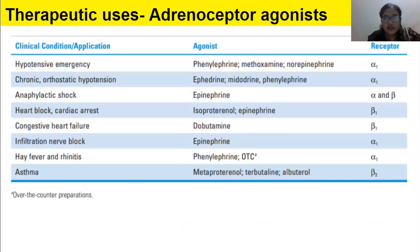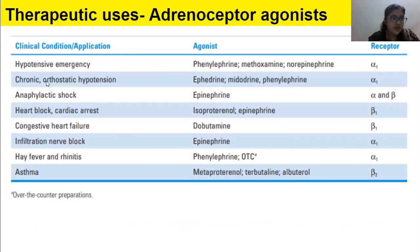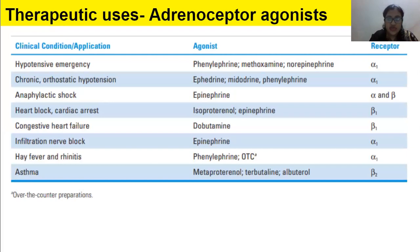Looking at therapeutic uses: for hypotensive emergencies, phenylephrine and methoxamine are used — not epinephrine — acting via alpha-1 receptors. For chronic orthostatic hypotension, where blood pressure drops upon standing, ephedrine, midodrine, and phenylephrine are used, also via alpha-1 receptors.